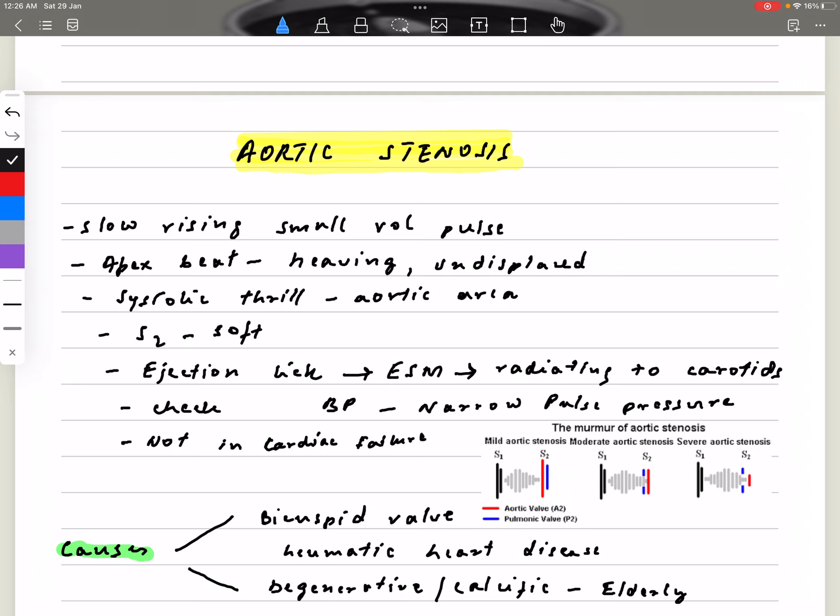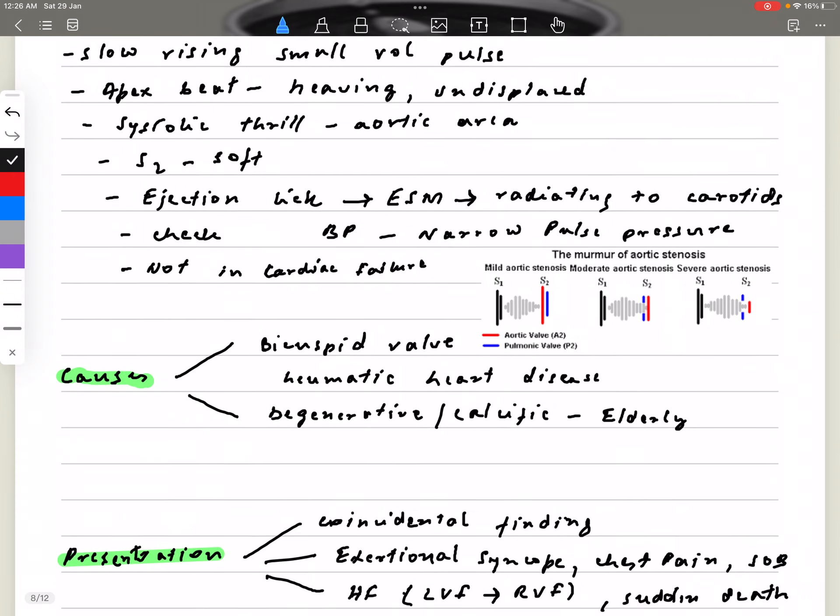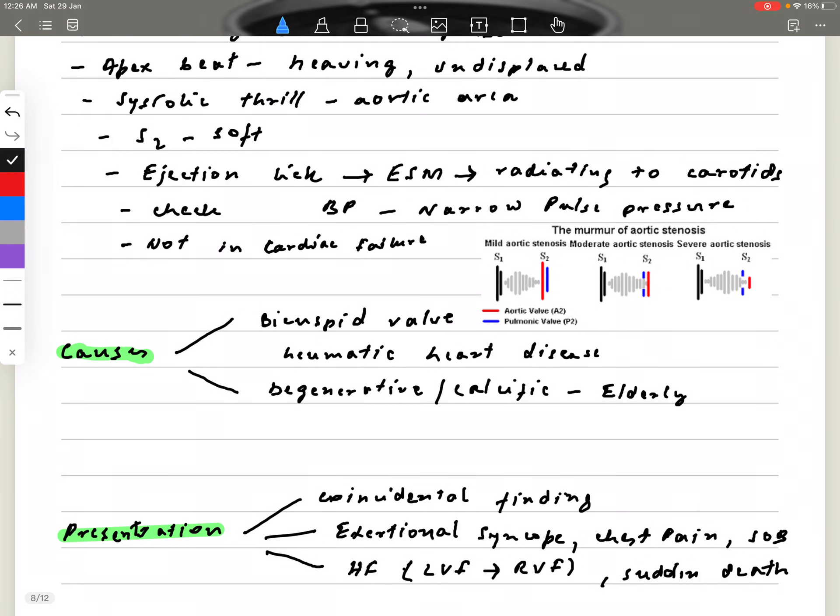So let's talk a bit about the causes of aortic stenosis. It can be congenital like a bicuspid valve, it can be because of rheumatic heart disease, or degeneration or calcification in elderly patients. So these are the main causes.